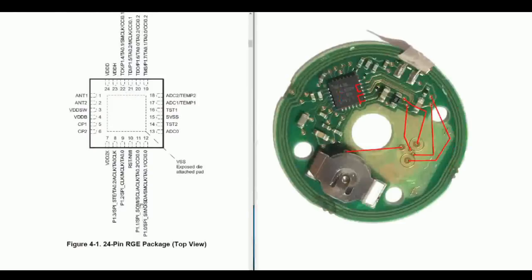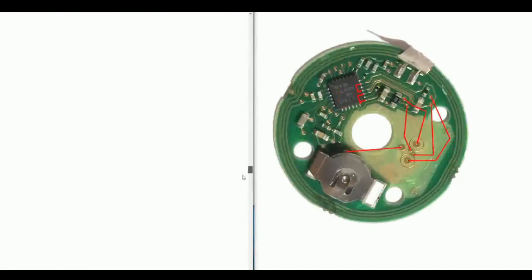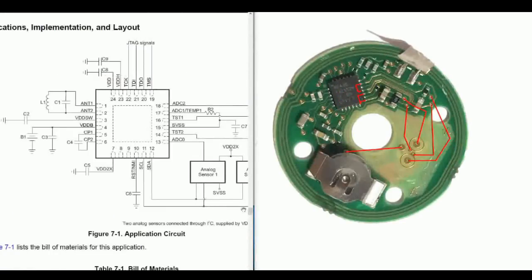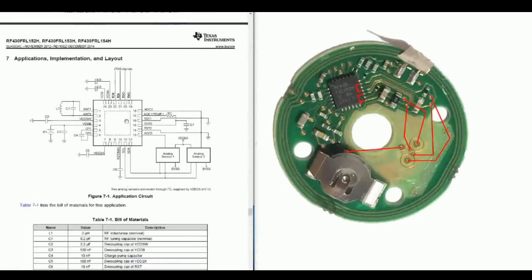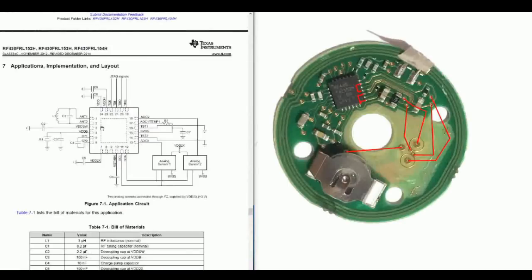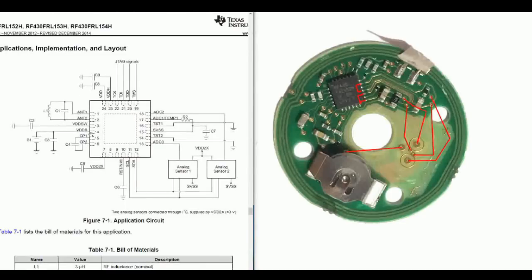Another interesting thing I saw on this data sheet was the application circuit, which shows how the manufacturer recommends this circuit be used, or one recommendation how this chip be used in a circuit. And as you can see, the antenna is connected through a capacitor, and that's what they've done here.